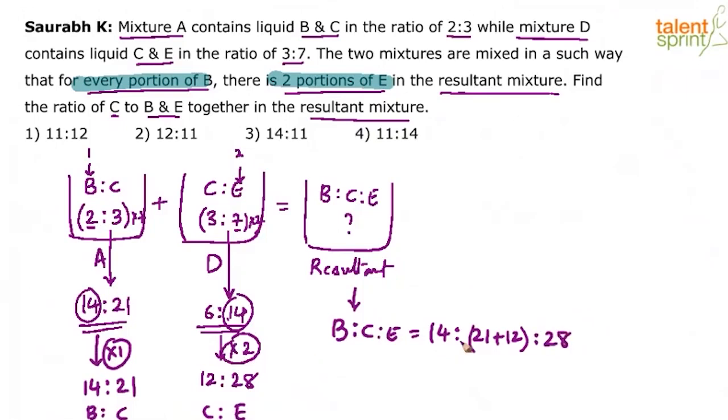But then the question is not B is to C is to E. The question is C versus B to E. So C is to B plus E. How much will that be? C is 21 plus 12, 33 and B plus E. Add these two. Add 14 and 28 is 42. That's it. So 11 is to 14 will be the answer.